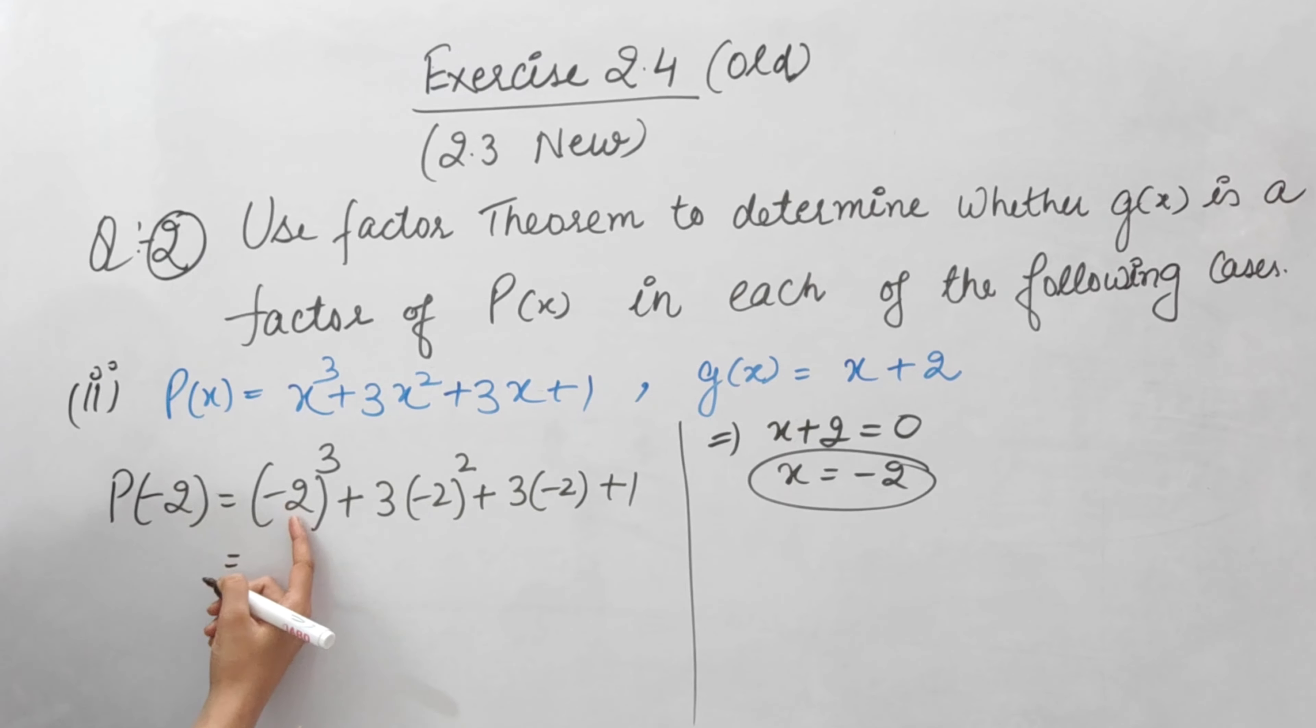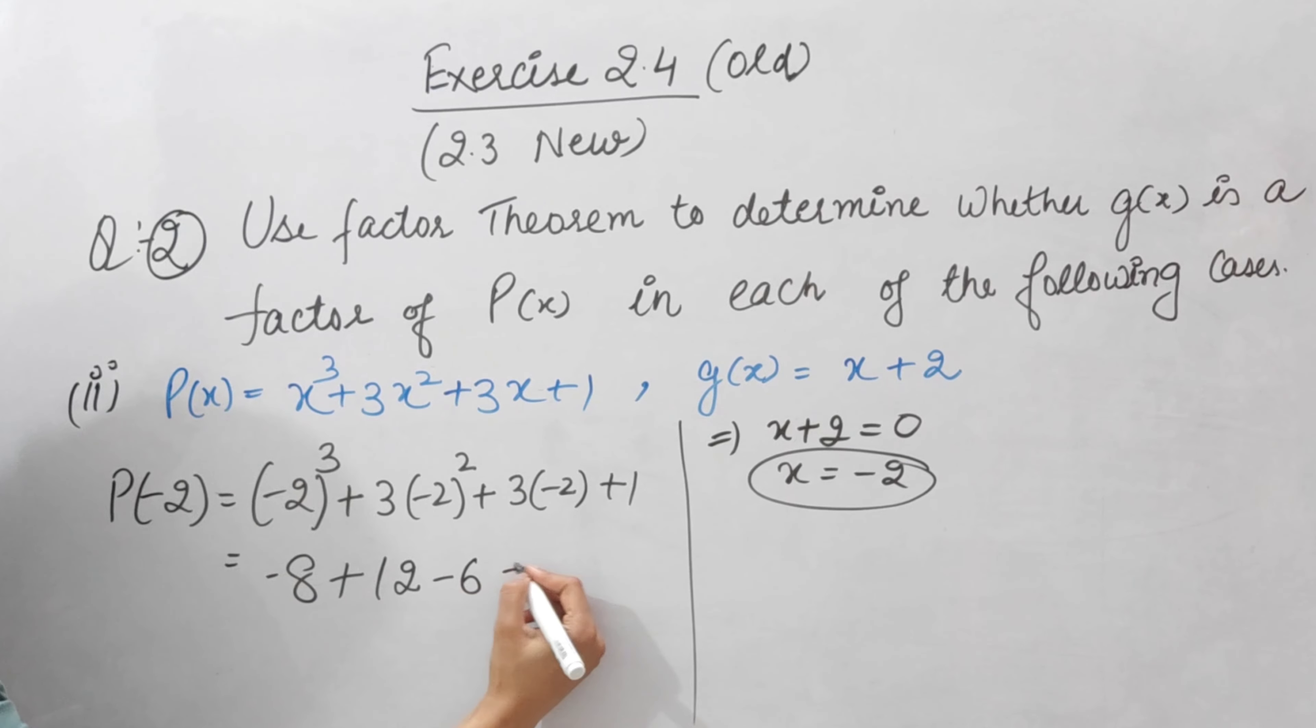Now we will solve it. 2 times 2 is 4, times 2 is 8, so minus 2 cube is minus 8. Plus 3 times minus 2 square - square is plus, so 4 times 3 is 12. Here 3 times 2 is 6 with negative sign, plus 1. This gives us minus 8 plus 12 minus 6 plus 1.